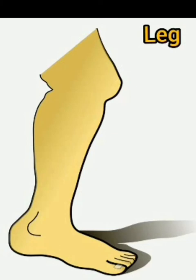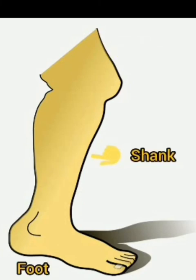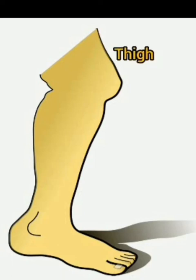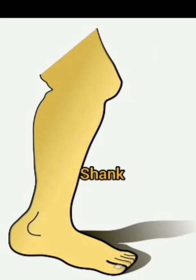The leg too has three parts: thigh, shank and foot. The thigh and shank are joined at the knee. The shank and foot are joined at the ankle.